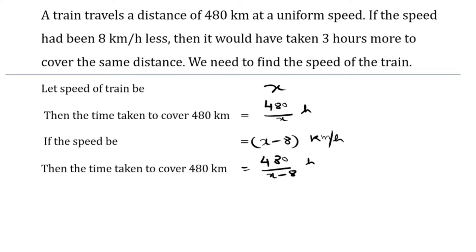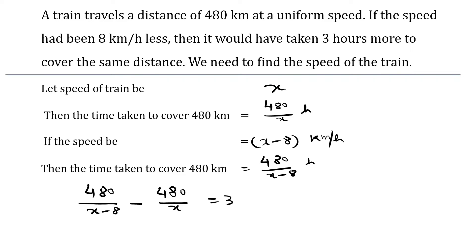Obviously the second time would be more because the speed is less, and the difference between these two times is given to be 3 hours. So the difference of two times — that is 480 over (x minus 8) minus 480 over x — is equal to 3.